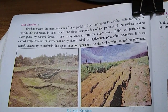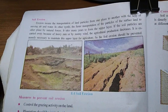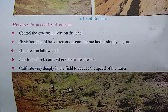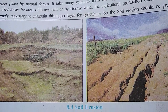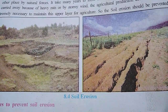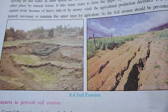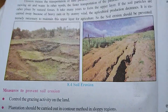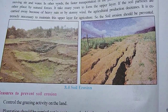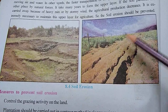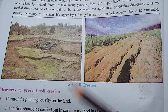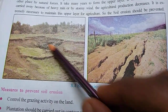This question can come for two marks or three marks. In the photographs, both images indicate soil erosion — both places show areas where particles are carried out from one location to somewhere else.